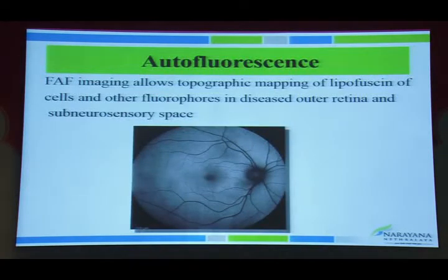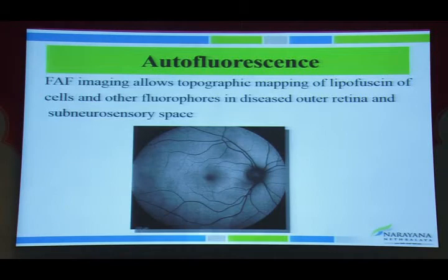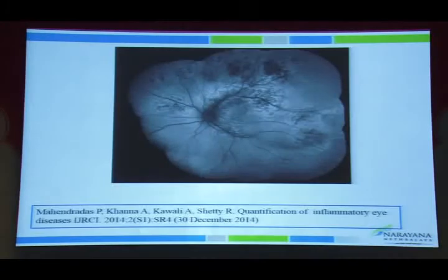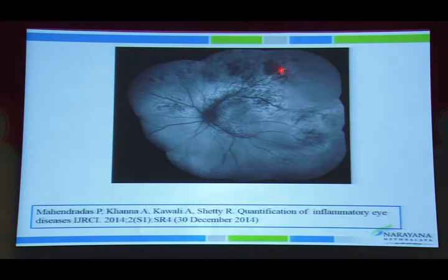Moving to autofluorescence: autofluorescence maps lipofuscin and other fluorophores in the outer retina and sub-neurosensory space. In normal fundus, the disc, blood vessels, and macula are darker. In serpiginous-like choroiditis, hypoautofluorescence corresponds to healed scars and hyperautofluorescence indicates active edges.